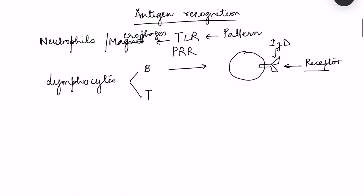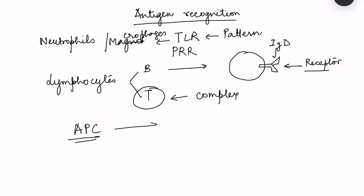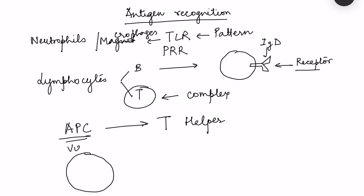The recognition of antigens by T cells is a more complex process which requires antigen recognition by antigen presenting cells, which then process the antigen and present it to T cells - specifically to helper T cells. In other cells, such as a virally infected cell, the virus antigens are recognized and presented to cytotoxic T cells.